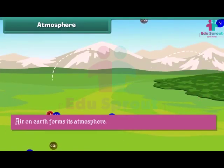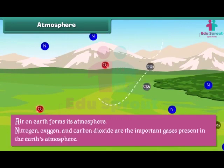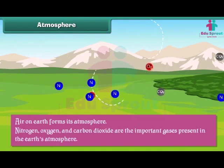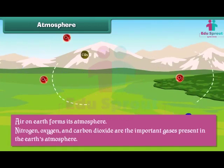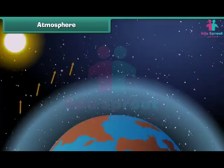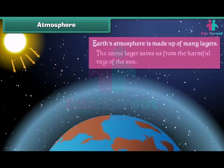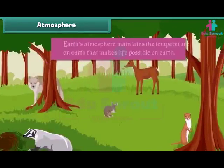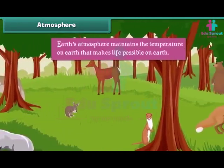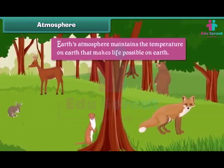Air on earth forms its atmosphere. Nitrogen, oxygen and carbon dioxide are the important gases present in the earth's atmosphere. Earth's atmosphere is made up of many layers. The ozone layer saves us from the harmful rays of the sun. Earth's atmosphere maintains the temperature on earth that makes life possible.